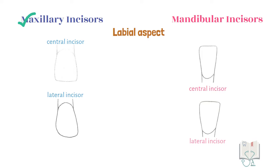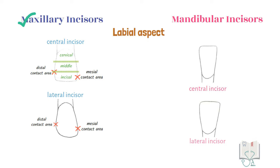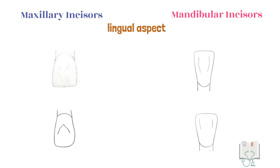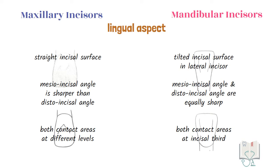Regarding the contact areas in maxillary incisors, both the mesial and distal contact areas are at different levels. In the central incisor, the mesial contact area is in the incisal third and the distal contact area is at the junction of the incisal and middle third. In the lateral incisor, the mesial contact area is at the junction of the incisal and middle third, and the distal contact area is in the middle third. However, in mandibular incisors both contact areas are in the incisal third for both incisors.